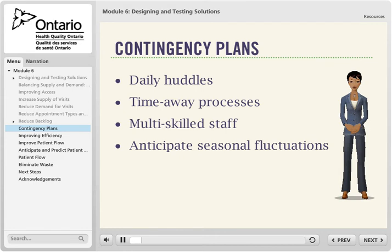Contingency plans help to address variations in patient demand or provider supply, such as during flu season, and help the practice to be proactive in meeting patient needs. Staff daily huddles to review office flow and demand help the team keep on top of the schedule. Planning for staff time away ensures patient demand is met, while cross-training staff to handle multiple functions when others are away helps address seasonal fluctuations and keeps supply and demand in check.